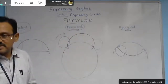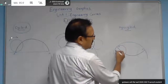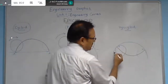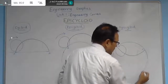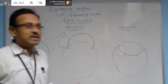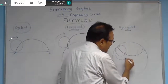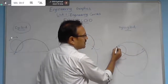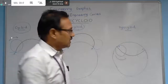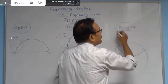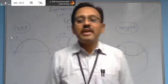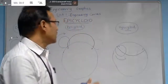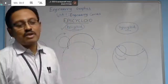For hypocycloid: when the small circle revolves for one complete revolution inside the large diameter circle in the anticlockwise direction, the path traced by point A on the small circle is called the hypocycloid. These are the different engineering special curves. In today's class we will see exclusively the construction of an epicycloid.